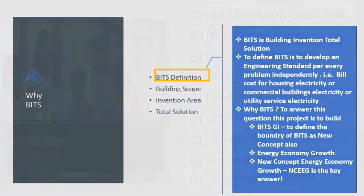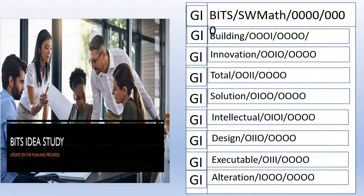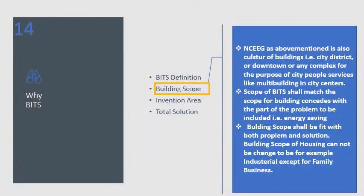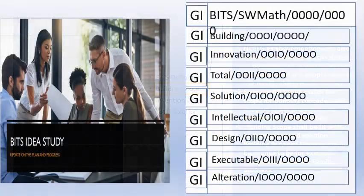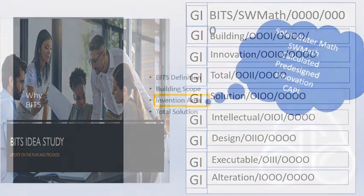In the following table of numbers we have: building, innovation, and total solution. Then the idea, which is intellectual, then design, then executable, then alteration — which is change.